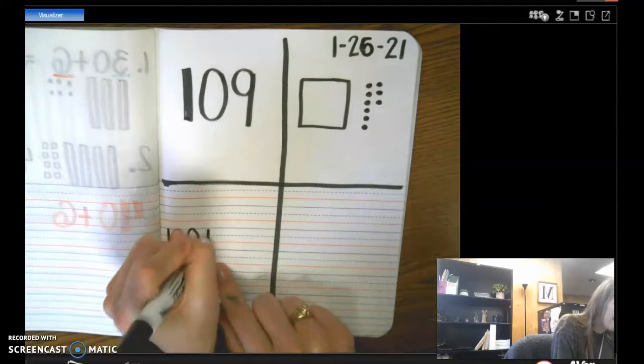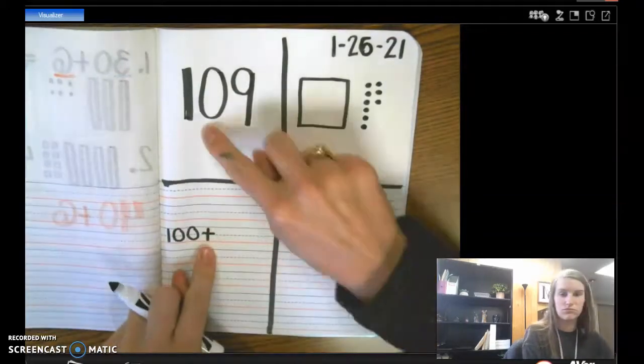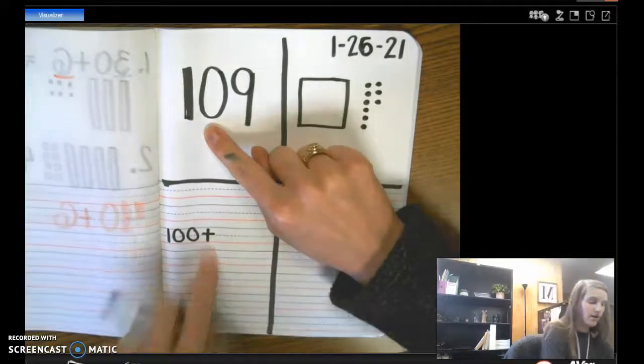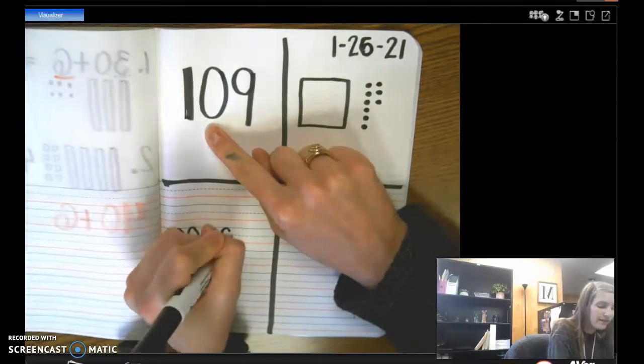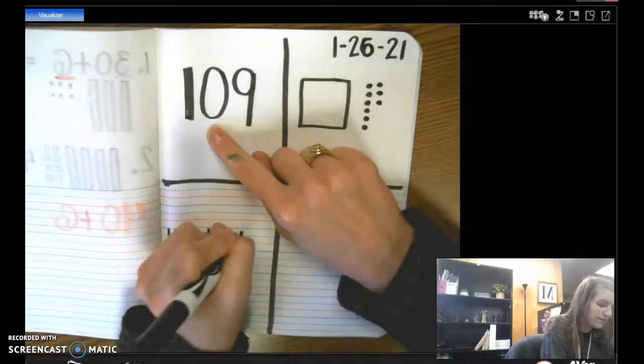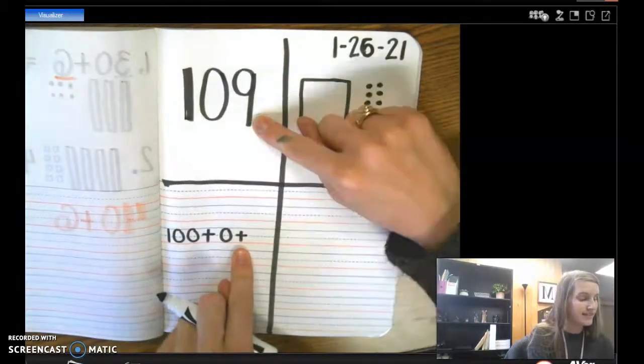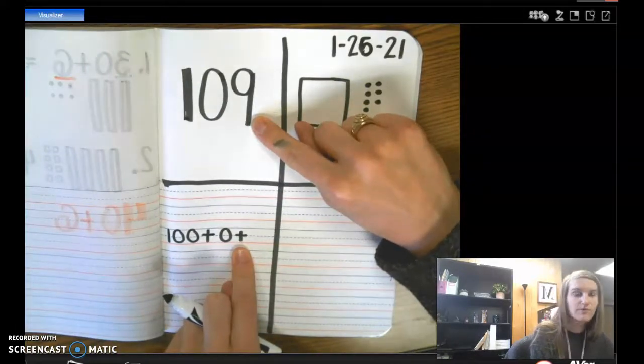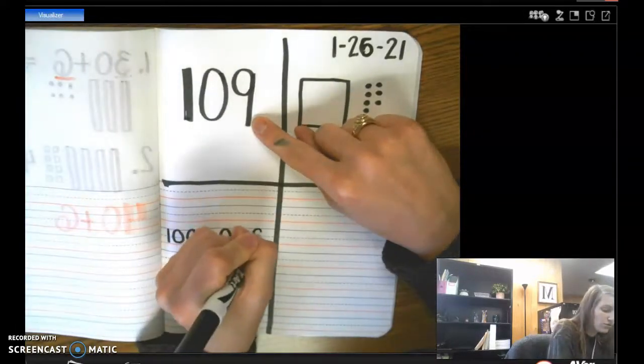Well, now let's add our next value. How many 10's? 0. So let's write the 0 right there. Then let's put a plus sign, and now let's add our 1's. How many 1's? 9 ones. Great job.